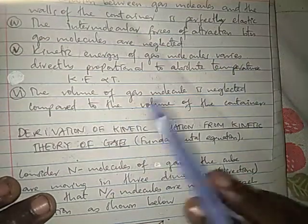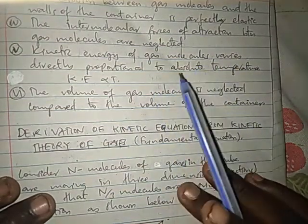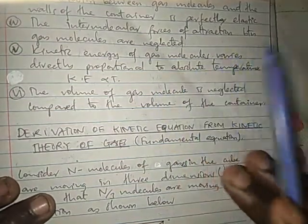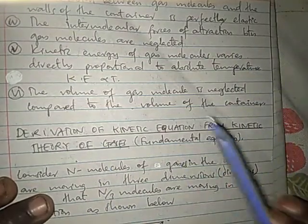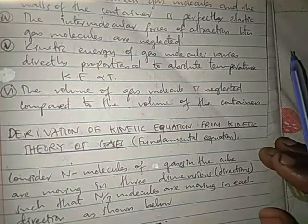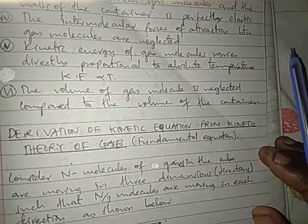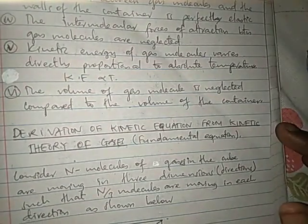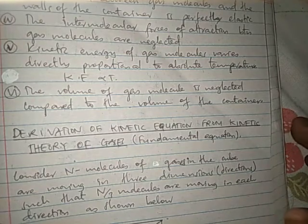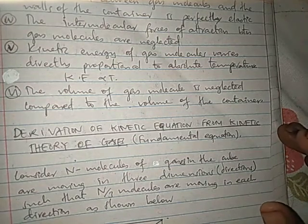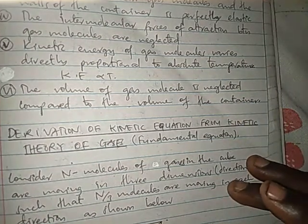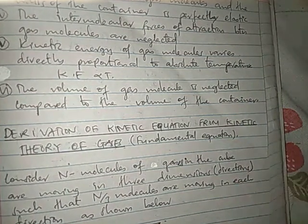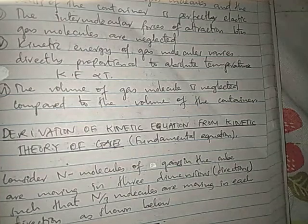In real gases, we are considering the intermolecular forces of attraction between the gas molecules, and we are considering the volume of the gas molecules with respect to the volume of the container. While in ideal gases, we are neglecting the intermolecular force of attraction and we are neglecting the volume of the gas molecules. So that's all about the assumptions of the kinetic theory of gases.